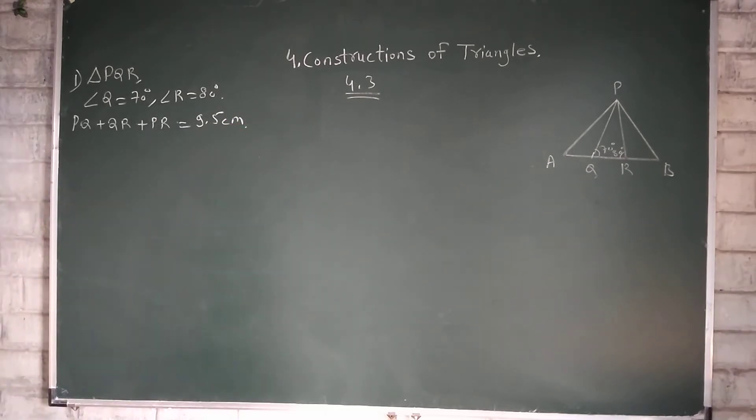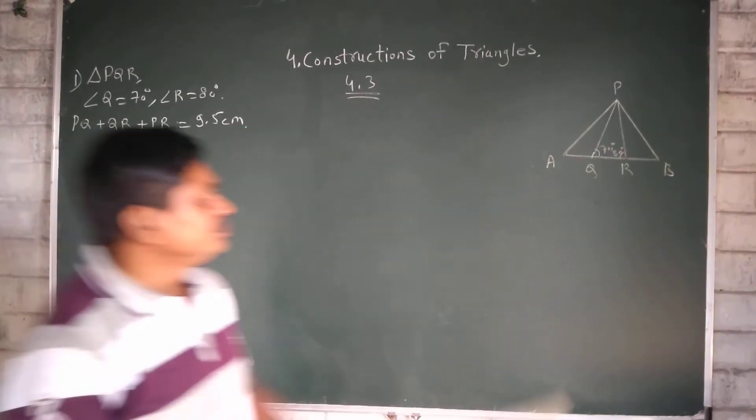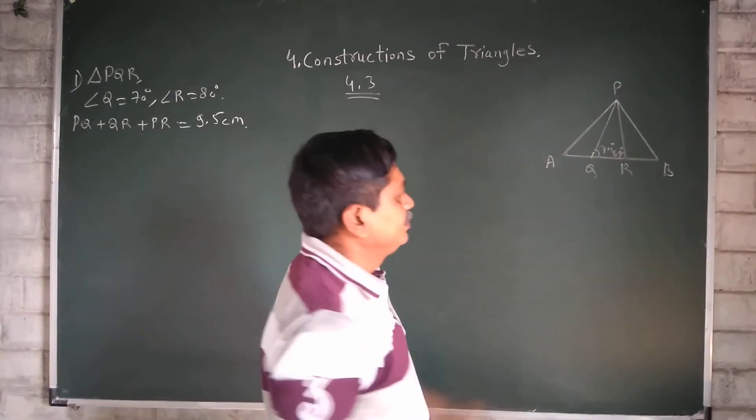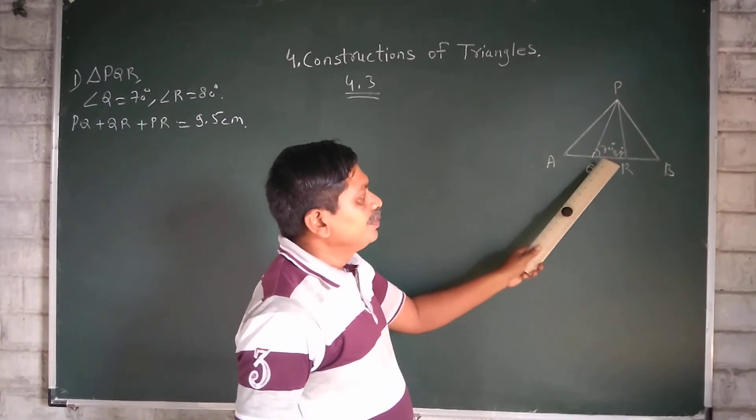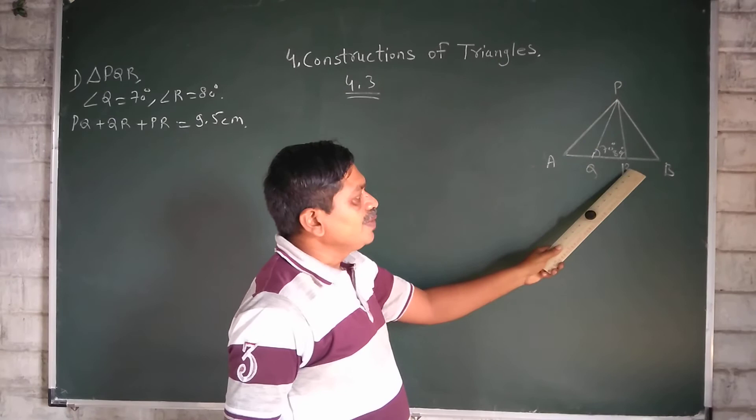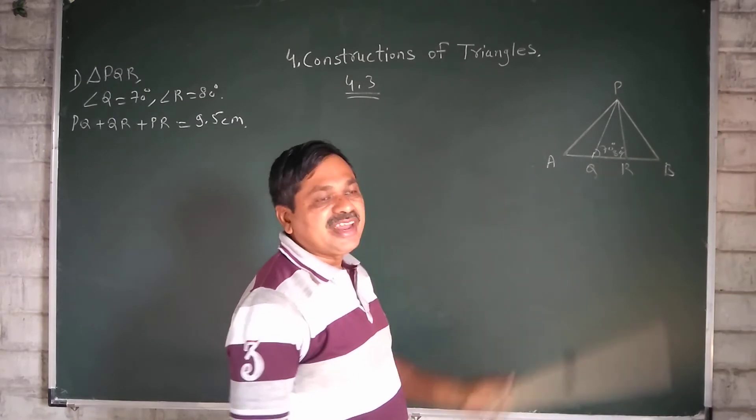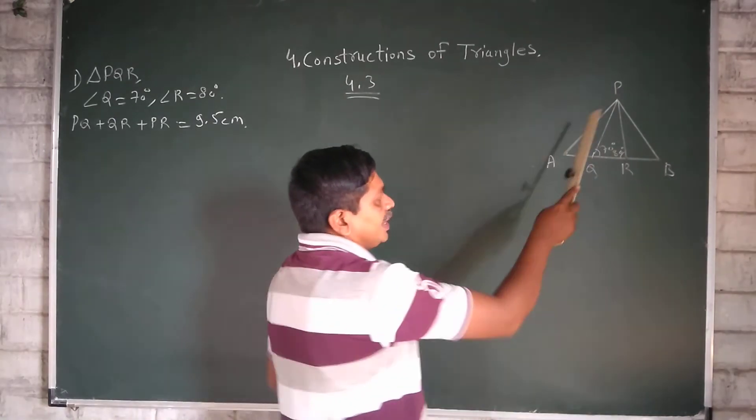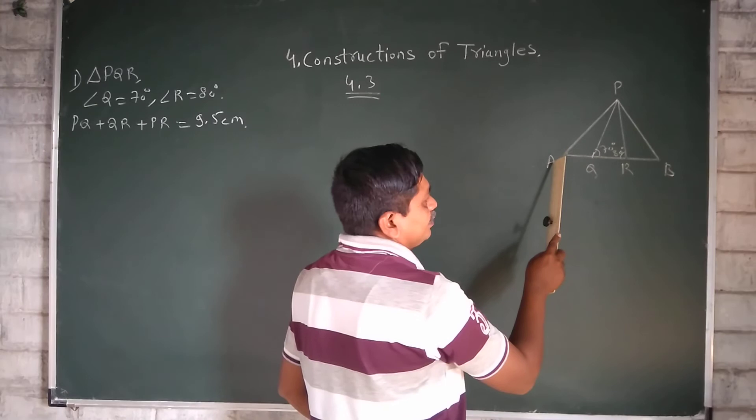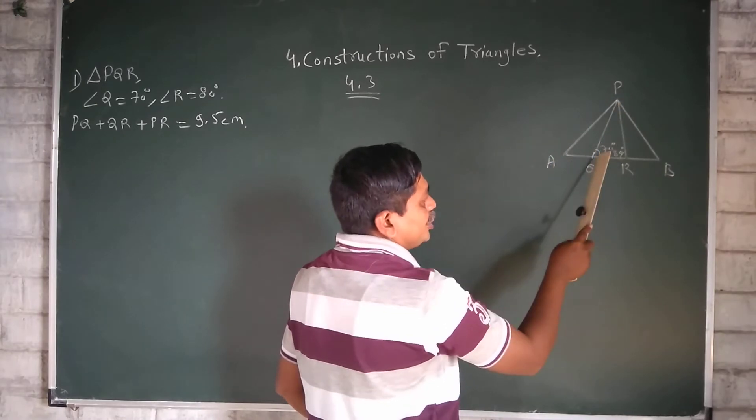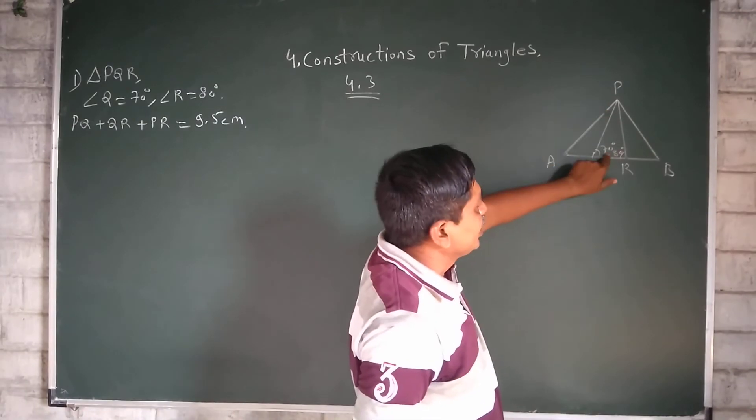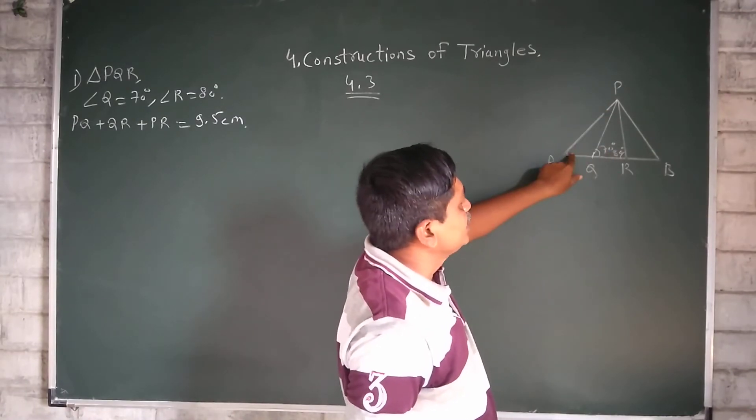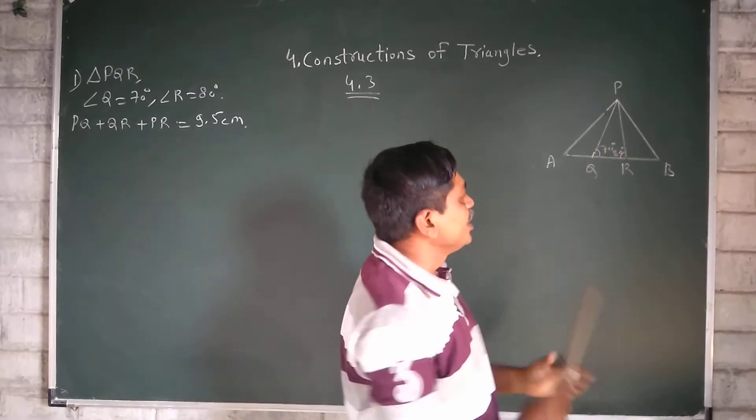Now see, in Triangle PAQ, this angle PQR is an exterior angle, so Angle A and Angle APQ measurement addition is this angle. So this is 70, therefore, this came as 35 degree.